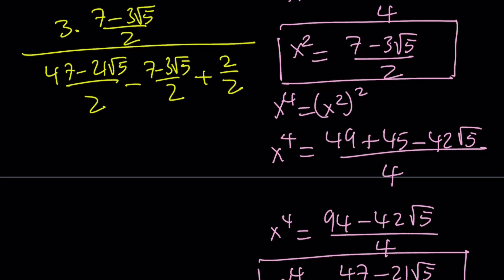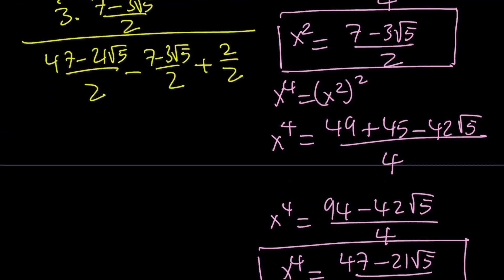And guess what? We can totally forget about the denominators because both the top and the bottom have the same denominators. So we can flip and multiply and cancel out the 2s. Let's go ahead and distribute the 3. That's going to give me 21 minus 9 root 5. And that is going to be divided by the bottom. That's going to be 47 minus 7, which is going to be 40. But then I'll have a 2, so that's going to become a 42.